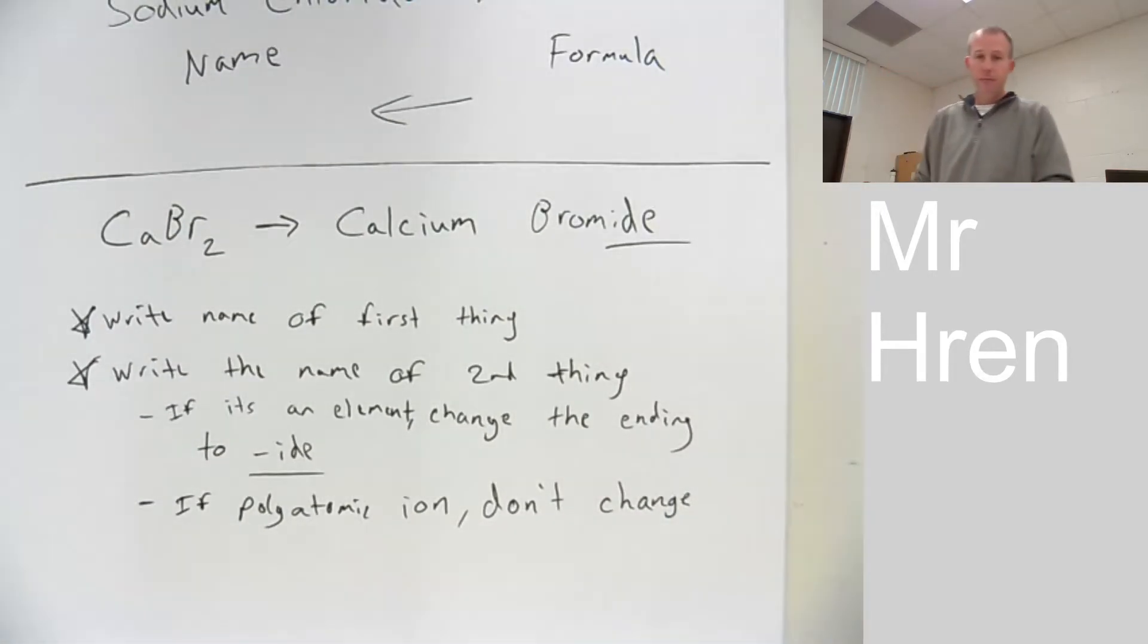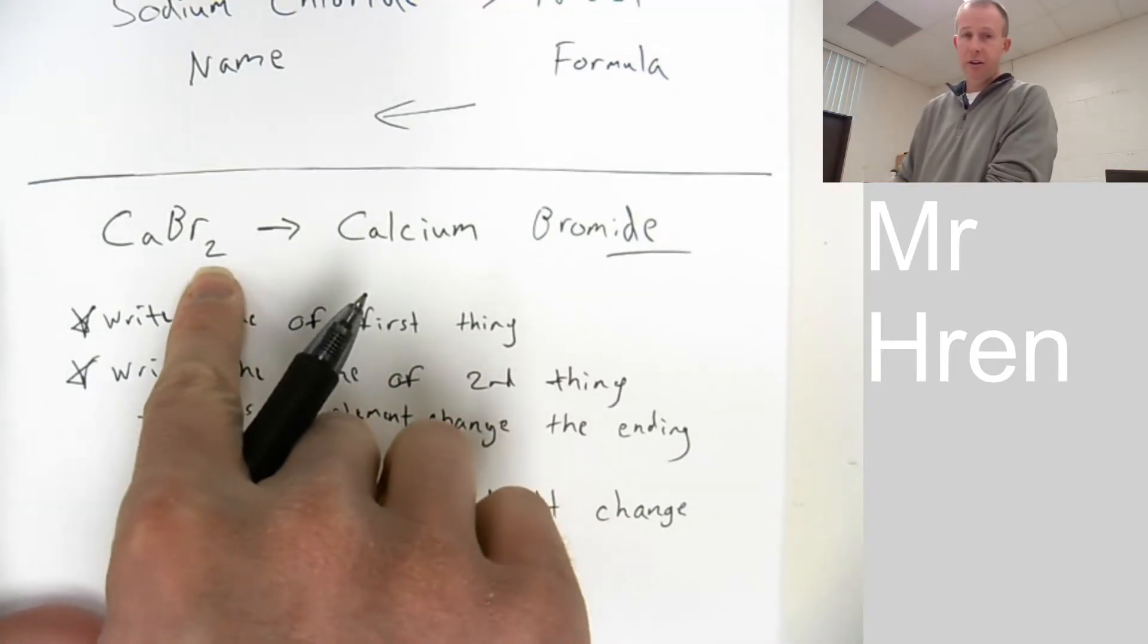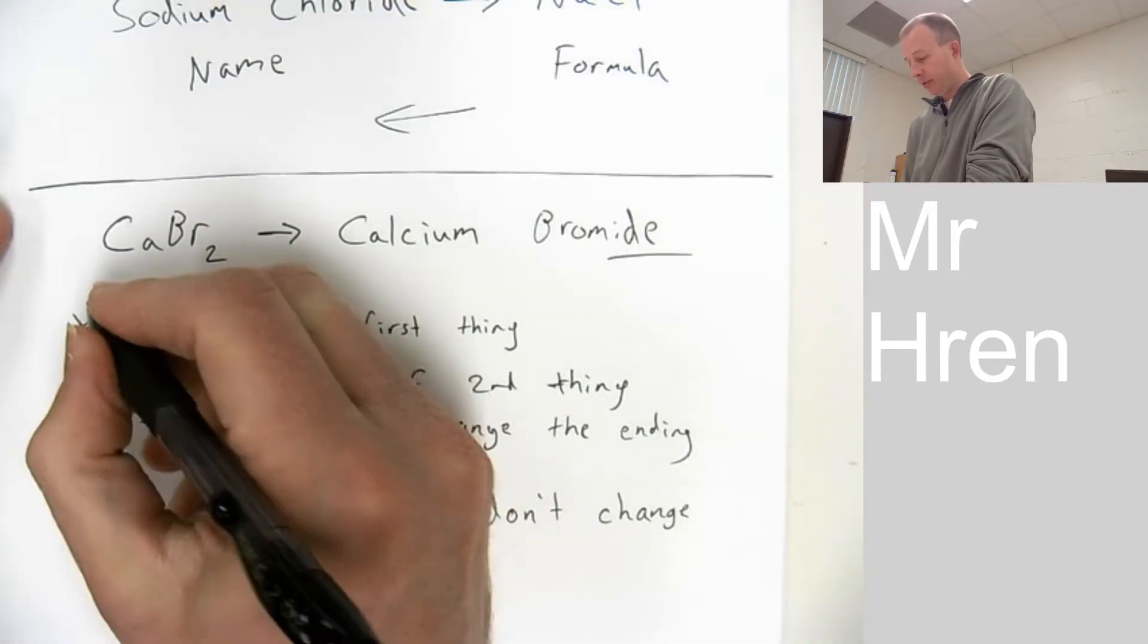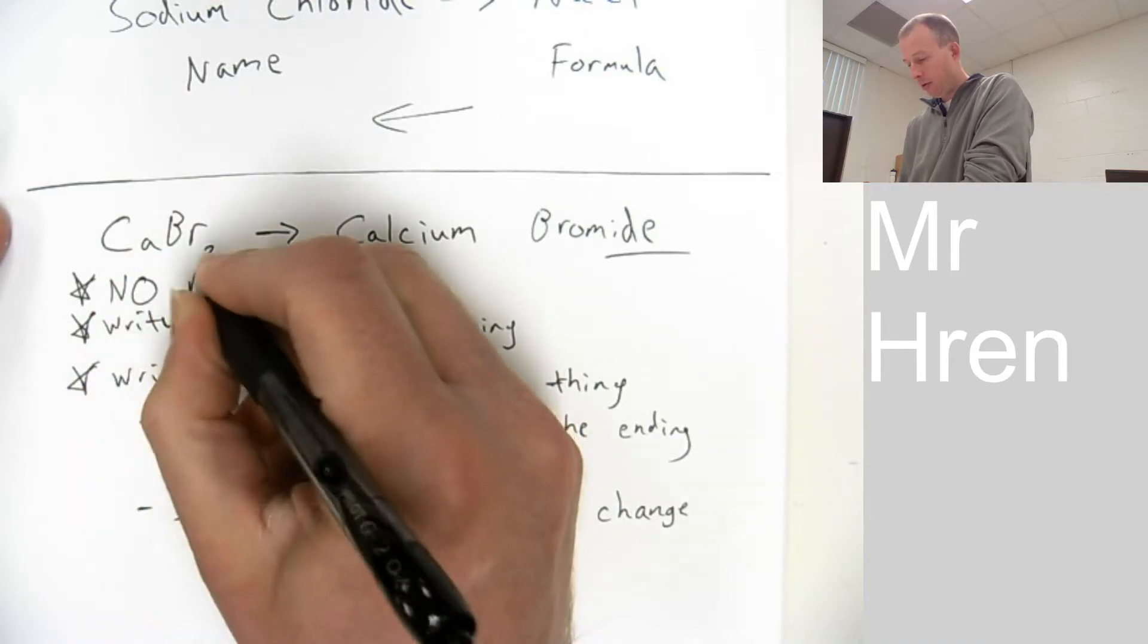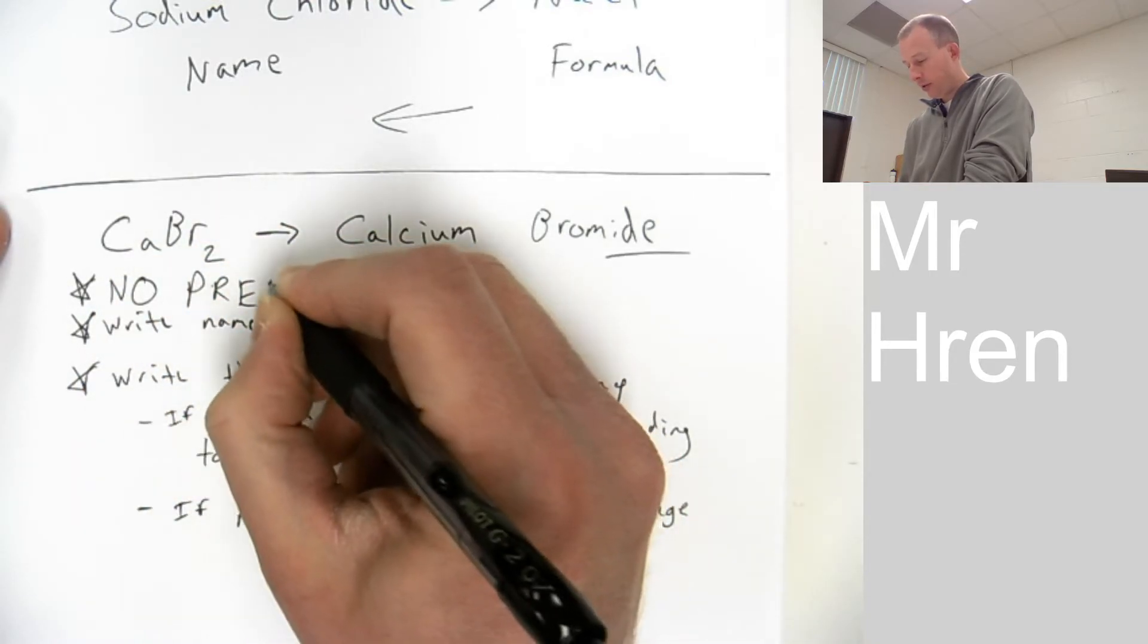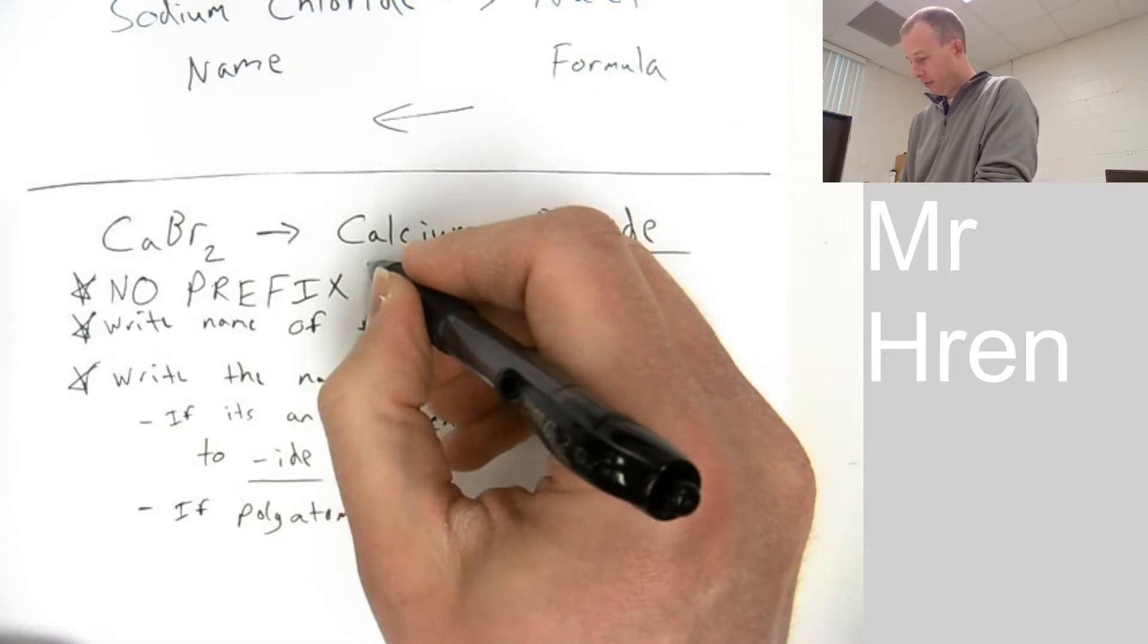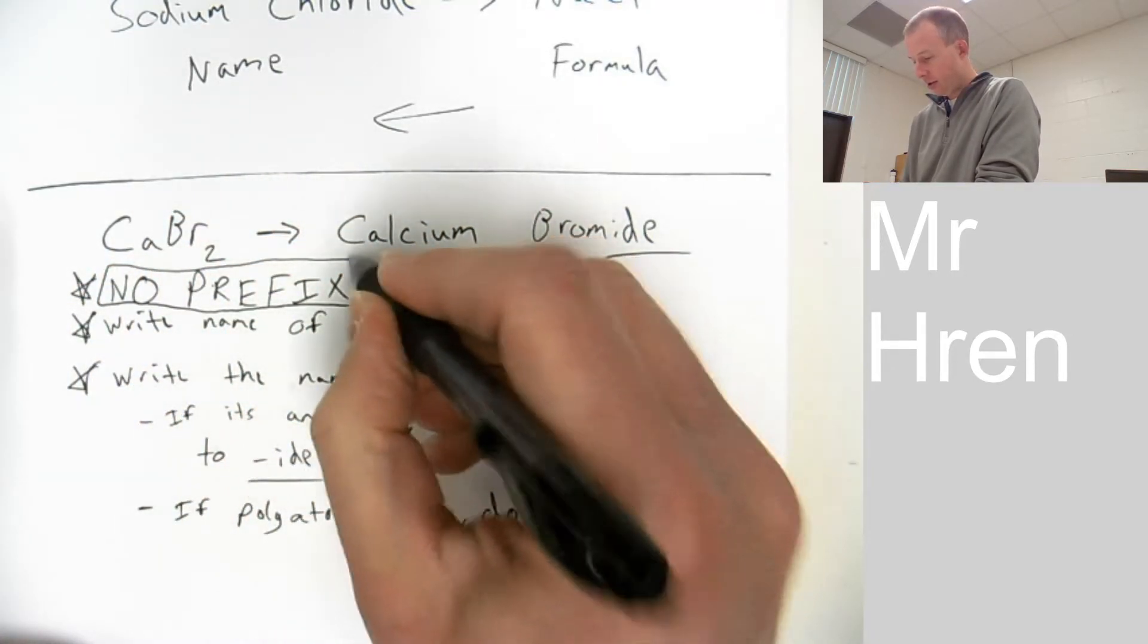Now, the most common mistake made on this, the only mistake made on this, usually, is you see a 2 there and you're like, well, what about the 2? I got to write the 2. No. For ionic compounds, number one, no prefix ever. No prefix. I was trying to fit it in. No prefix.